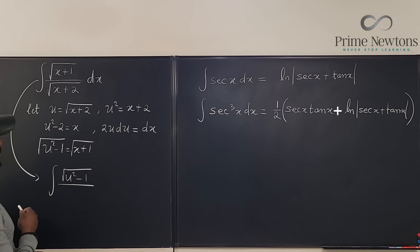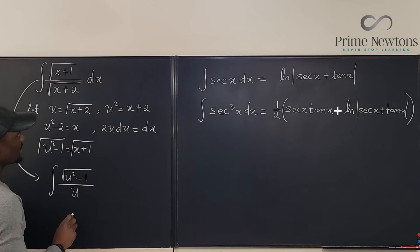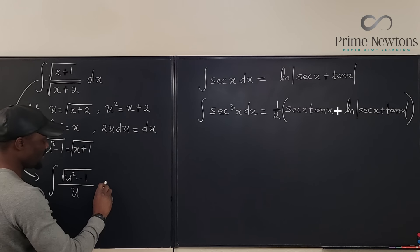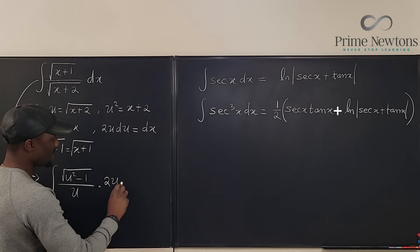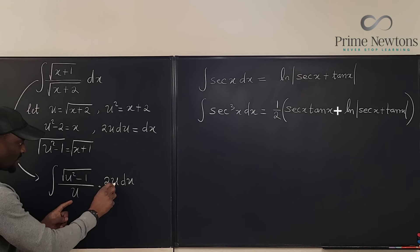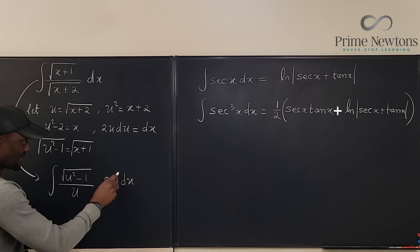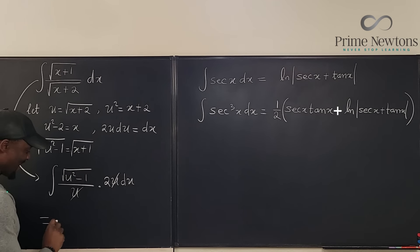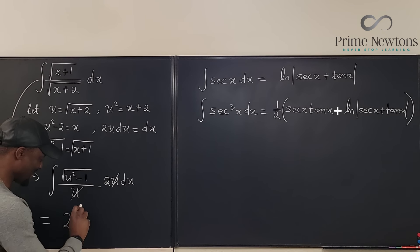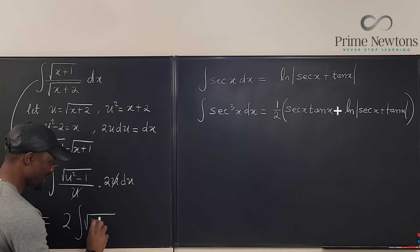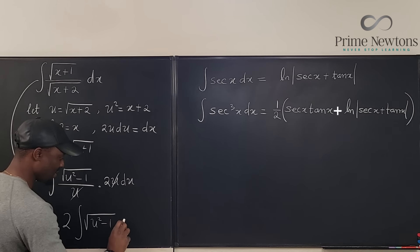So the integral becomes the square root of u squared minus one divided by the square root of x plus two, which is u, multiplied by dx, which is 2u du. This u cancels that u, giving us 2 times the integral of the square root of u squared minus one du.